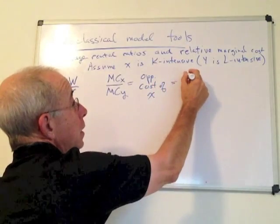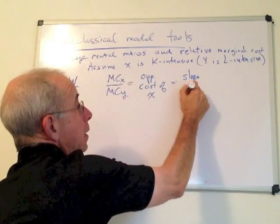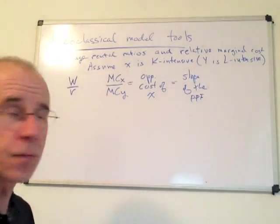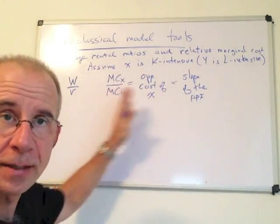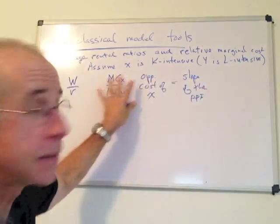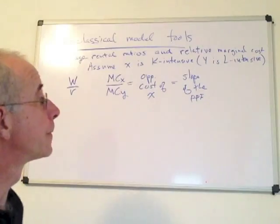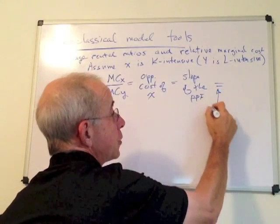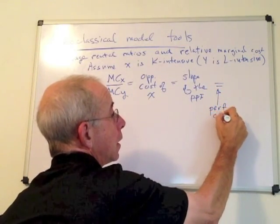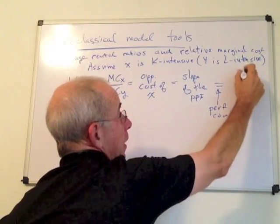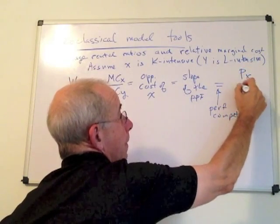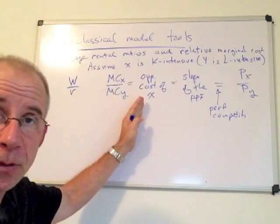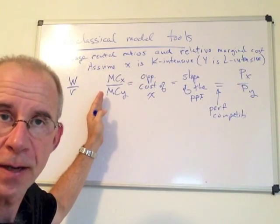It's also equal to the slope of the PPF in this neoclassical framework. So these are all different ways of saying exactly the same thing, and it's important to keep these in mind as you do this analysis. Finally, if we have perfect competition, perfect competition is going to give us px over py equal to the slope of the PPF, equal to the opportunity cost of X, equal to the relative cost of final output.